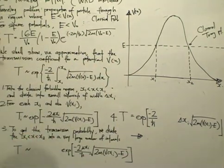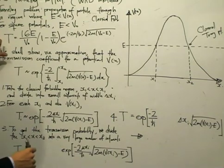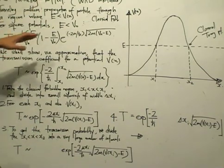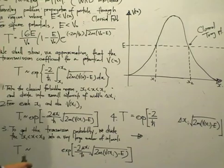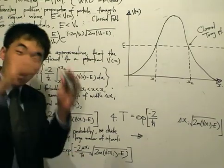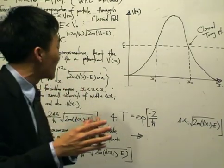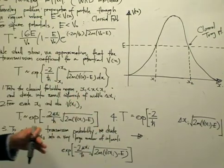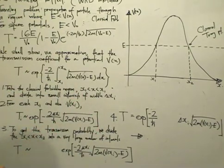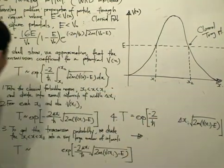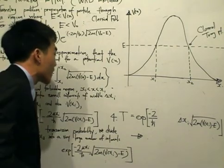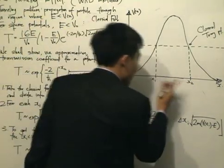The WKB approximation is one of the approximation methods we can use; the other two are the variational method and the perturbation method. To derive it, we take the known result for the square potential where the energy is much less than V₀. We'll use ideas from probability and the definition of the integral — the fundamental theorem of calculus. We take the classically forbidden region between x₁ and x₂ and divide it into small intervals of width Δxᵢ.